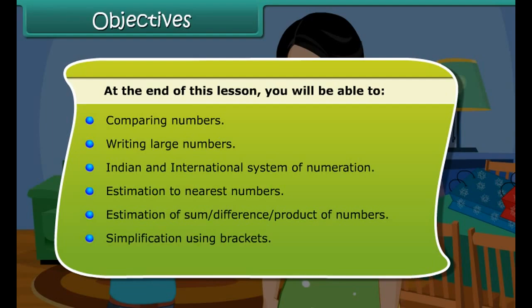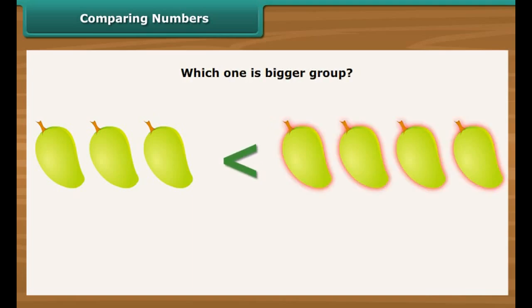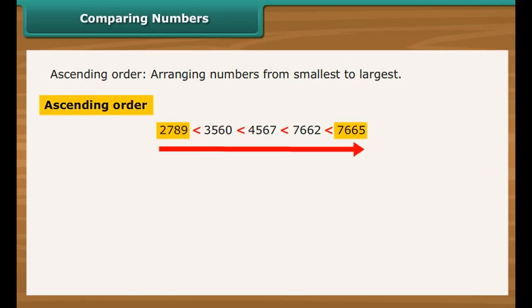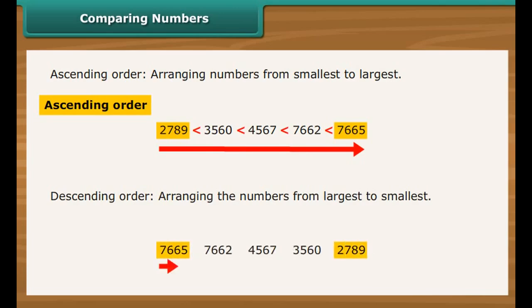Simplification using brackets, Roman numerals. Comparing numbers. A collection or group of numbers can be compared with each other. On comparing the numbers, we can tell which group is large. The arrangement of numbers from the smallest to the largest is called ascending order. The arrangement of numbers from the largest to the smallest is called descending order.